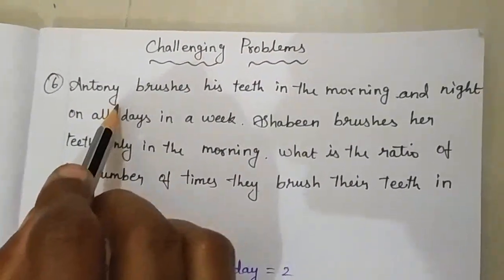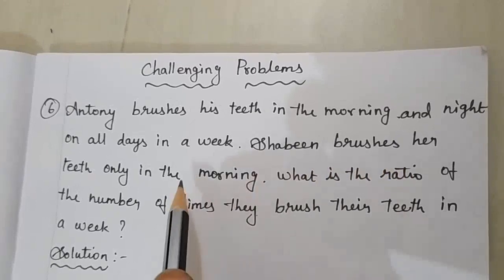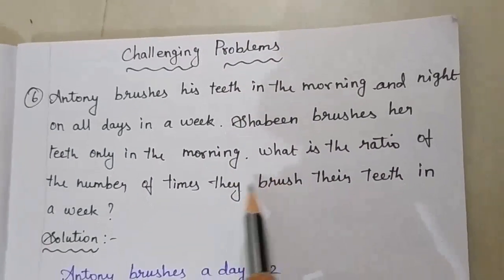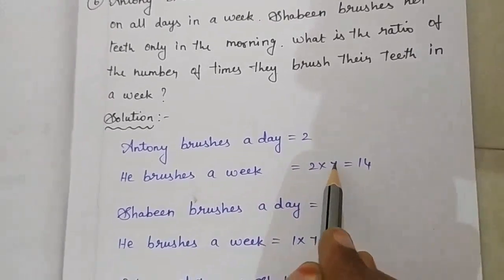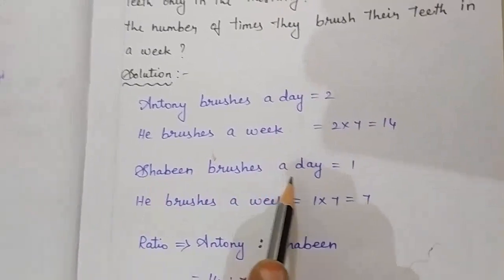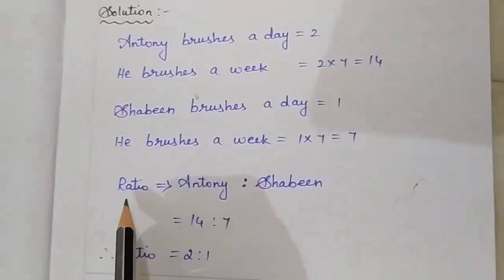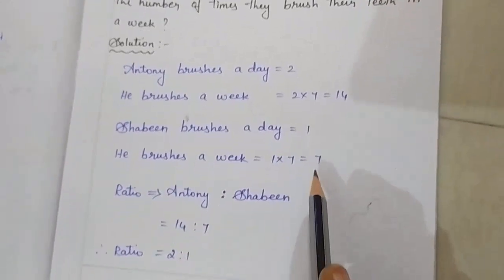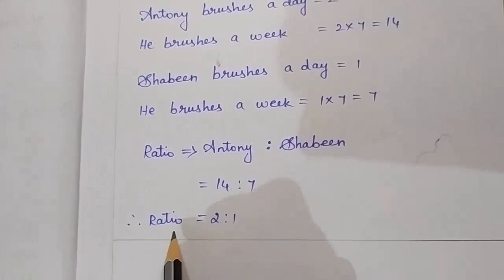Next, sixth sum. Antony brushes his teeth in the morning and night on all days in a week. Sabine brushes her teeth only in the morning. What is the ratio of the number of times they brush their teeth in a week? Antony brushes 2 times a day, so in a week: 2 into 7 equals 14. Sabine brushes 1 time a day, so in a week: 1 into 7 equals 7. The ratio of Antony to Sabine is 14 is to 7, which simplifies to 2 is to 1. Thank you.